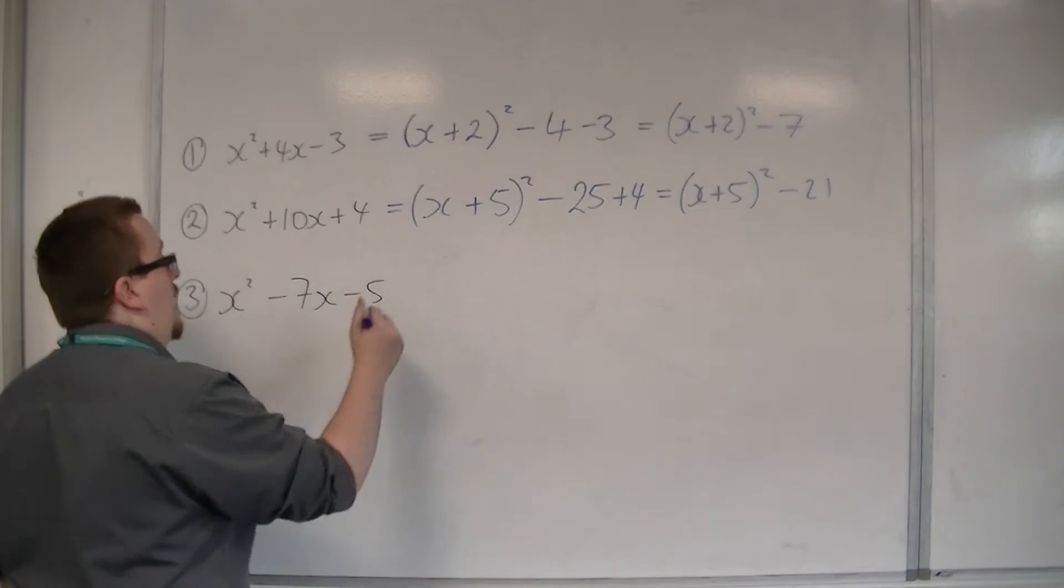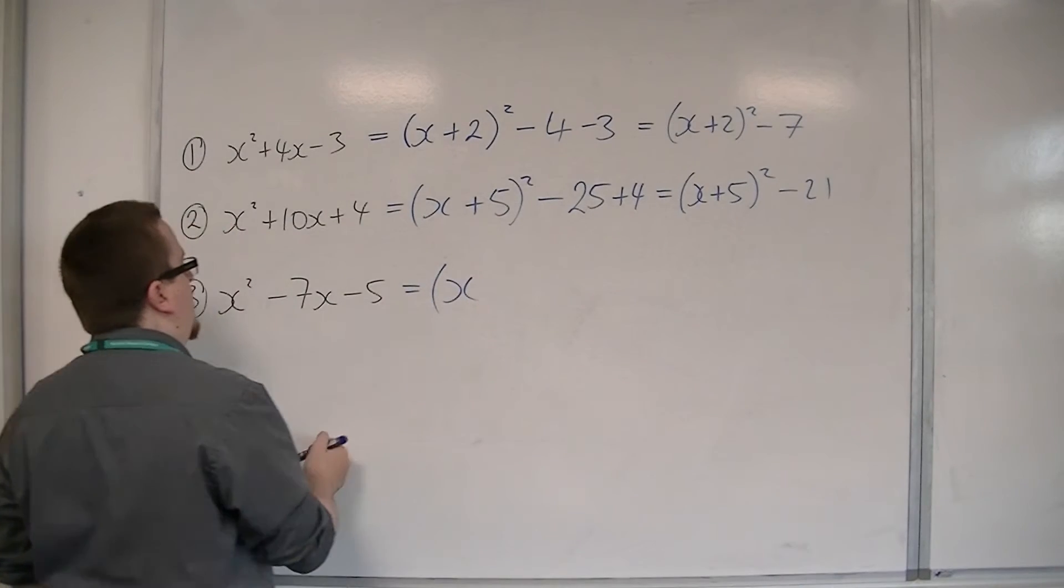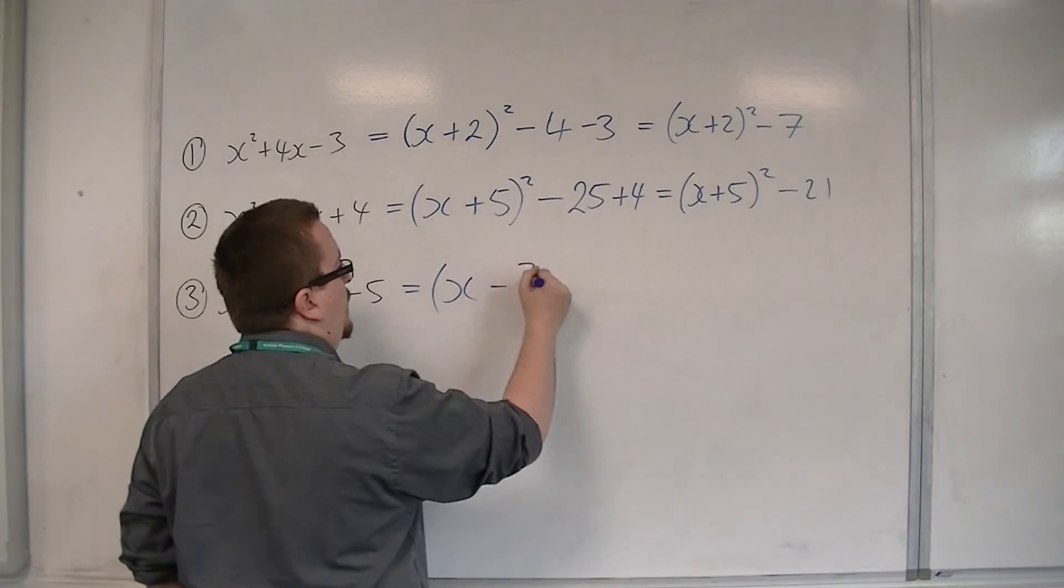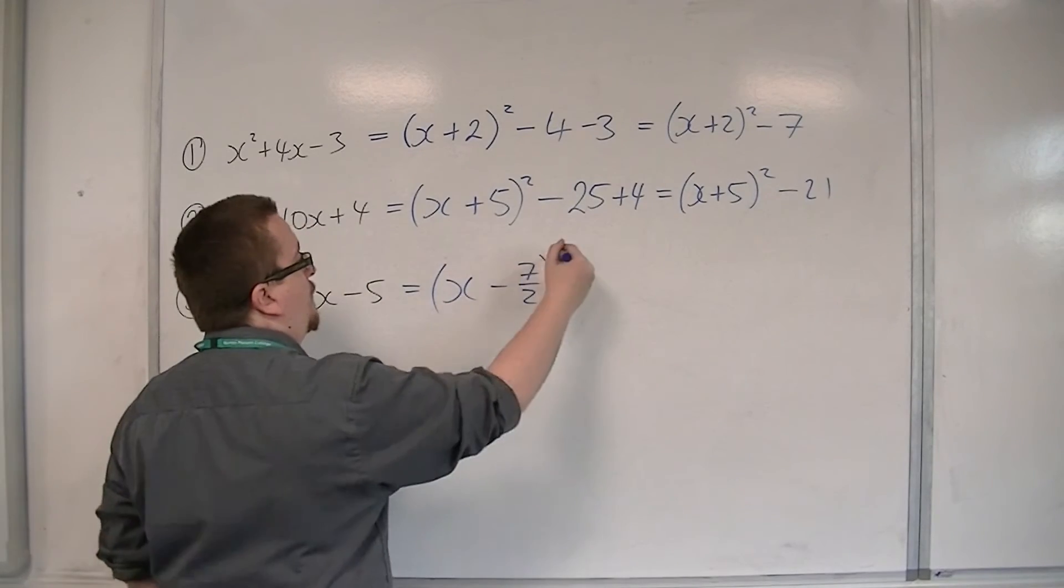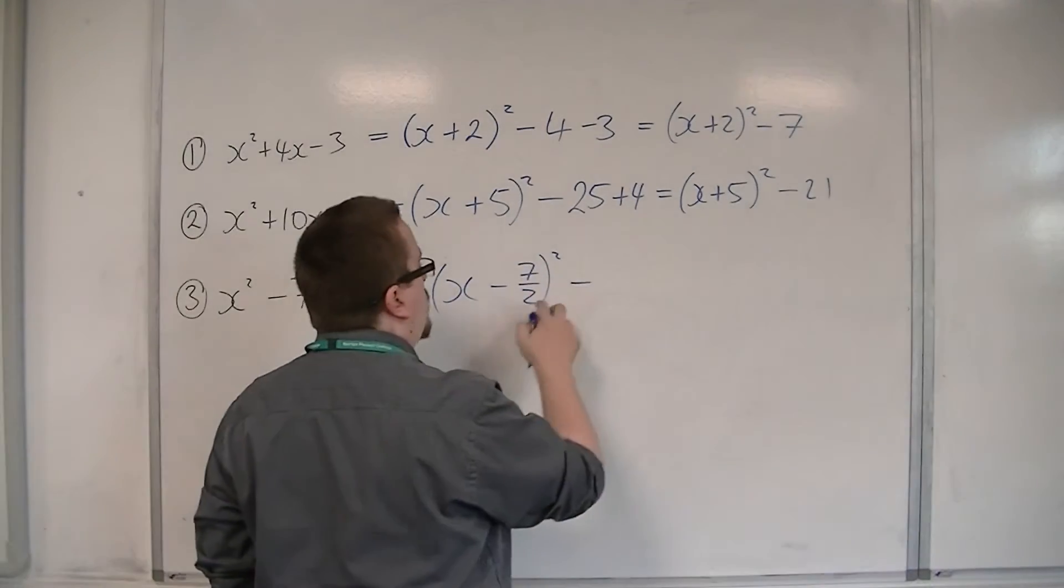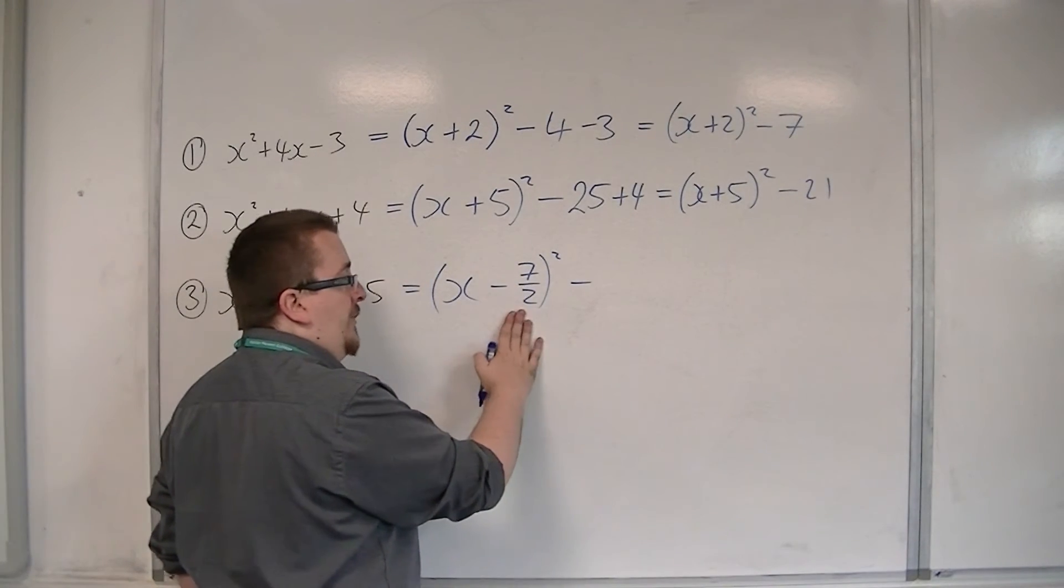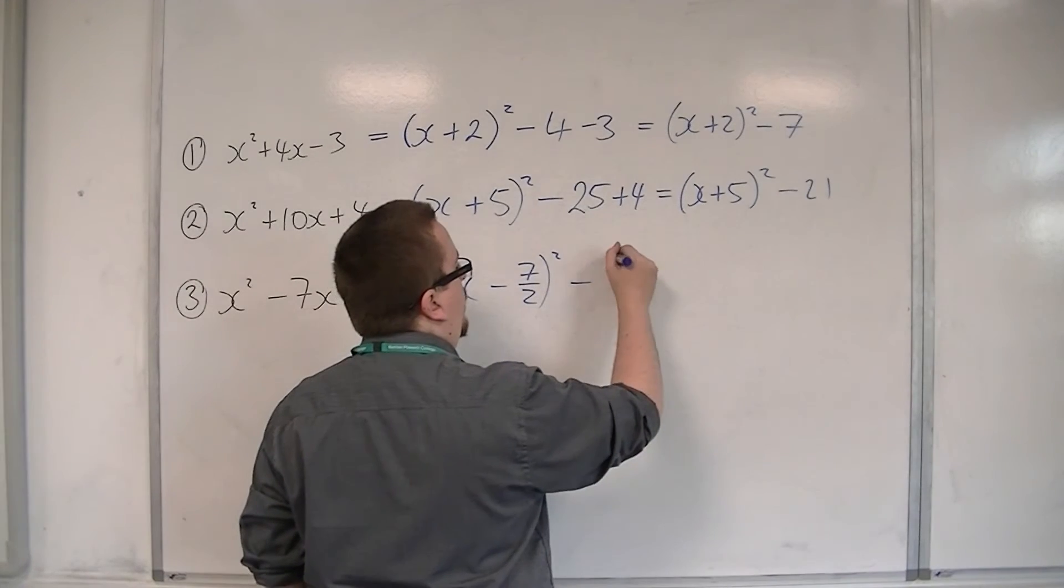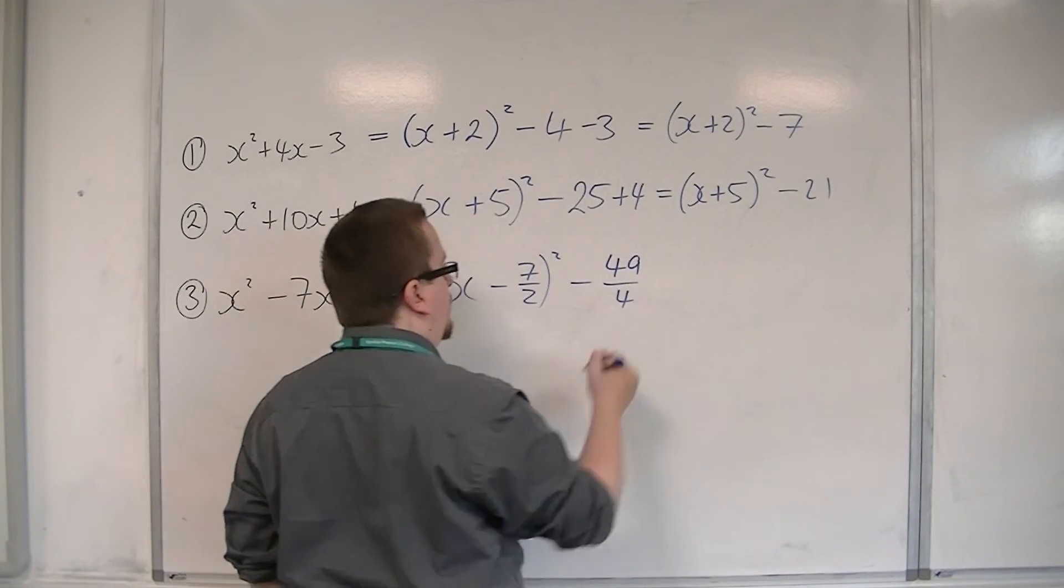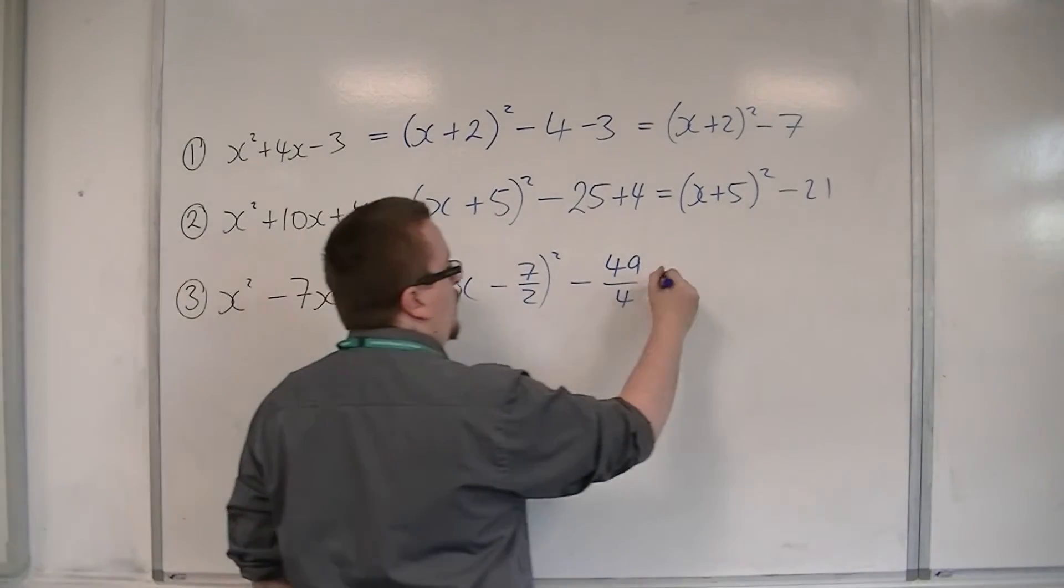For the third one, exactly the same thing. Open up a bracket. Half minus 7, so minus 7 halves or minus 3.5 squared. Take away the square of that number. Now the square of that number will be positive. So take away the square of that number is minus 49 over 4. And then I've got the take away 5 from before.